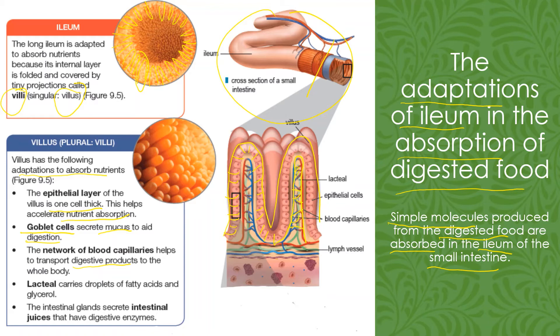Inside the villus there is also a lacteal — shown in green — which is part of the lymph vessel, meaning it is part of the lymphatic system. This lacteal will transport fatty acid and glycerol. There is also an intestinal gland at the villus that secretes intestinal juice, and this intestinal juice has digestive enzymes that help in the digestion process.